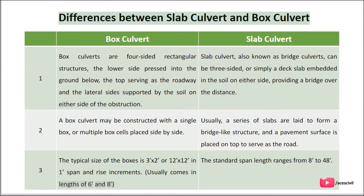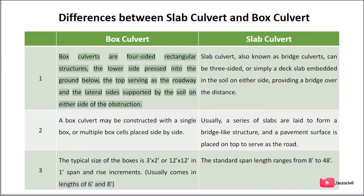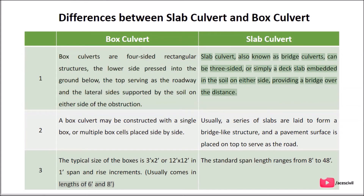Difference 1 — Structure: Box culverts are four-sided rectangular structures, with the lower side pressed into the ground below, the top serving as the roadway, and the lateral sides supported by soil on either side. Slab culverts, also known as bridge culverts, can be three-sided or simply a deck slab embedded in the soil on either side, providing a bridge over the distance.